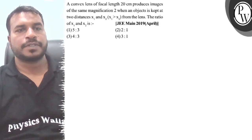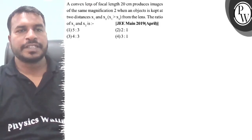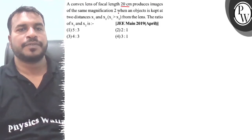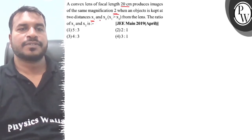Hello, let's understand the question. First, the question says a convex lens of focal length 20 cm produces image of the same magnification 2 when an object is kept at two distances x1 and x2 from the lens. The ratio of x1 and x2 is.